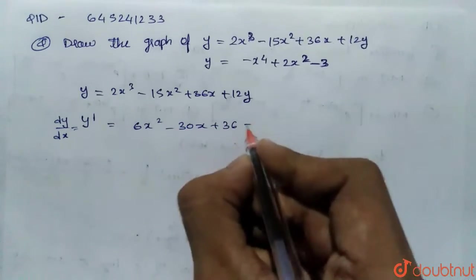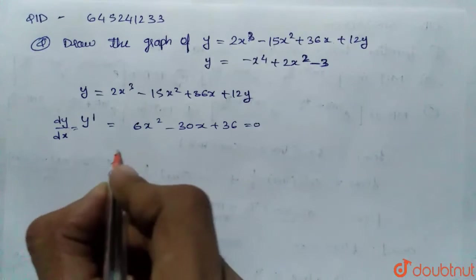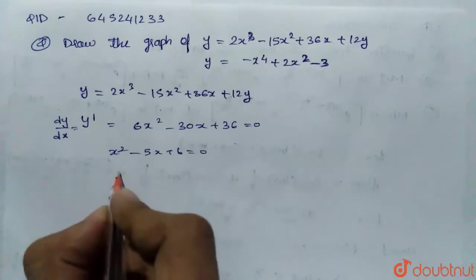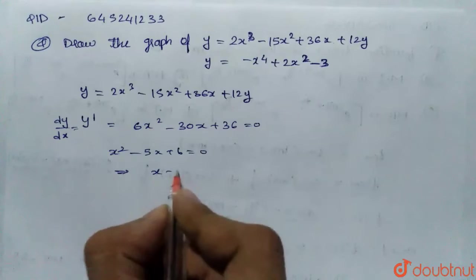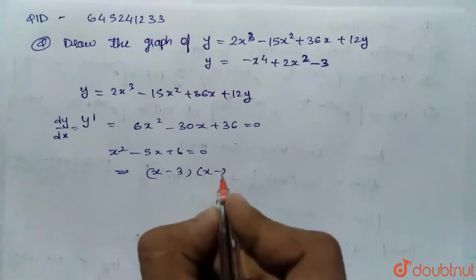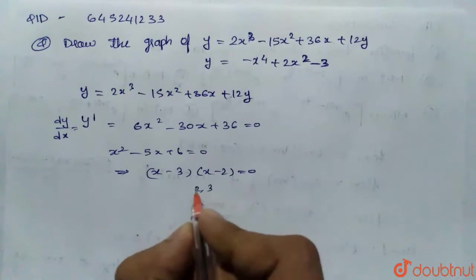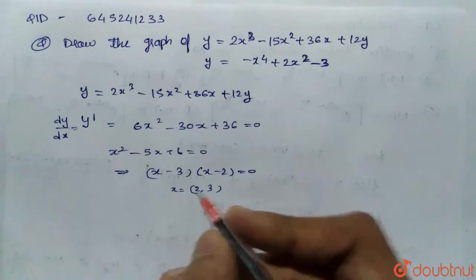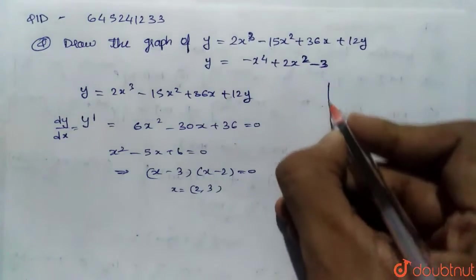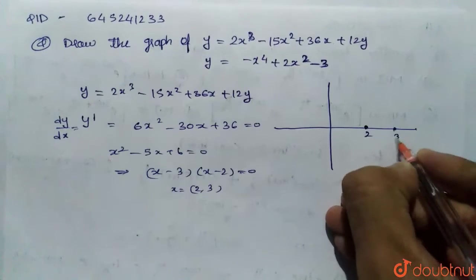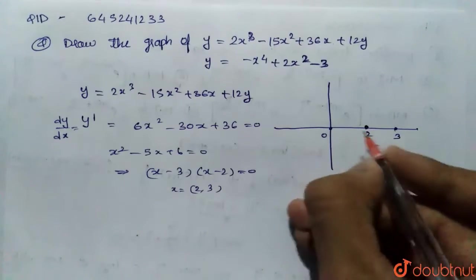When we equate this to 0 to get the points, it would be x² - 5x + 6 = 0 and solving this quadratic equation, we would get (x - 3)(x - 2) = 0. So, x = 2, 3 are the points where the curve has a sharp turn. So, x = 2, x = 3 and this is x = 0.